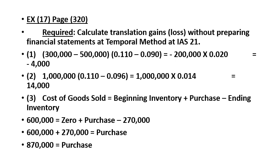Step three: we first need to calculate purchases, because the exercise does not give them directly. Purchase is derived from cost of goods sold: beginning inventory plus purchases minus ending inventory. Cost of goods sold is 600,000. Beginning inventory comes from the balance sheet at January 1st, and ending inventory from the balance sheet at December 31. We have 600,000 plus 270,000, giving purchases of 870,000.